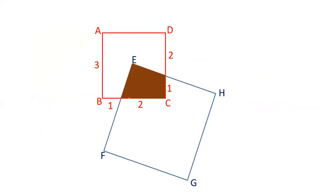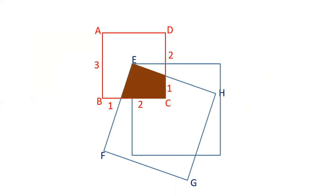First of all, rotate square EFGH at point E to make it a straight square with AD parallel to EH. This gives us F and G positions such that EH is parallel to AD and EF is parallel to AB. This is parallel to all sides of the square.